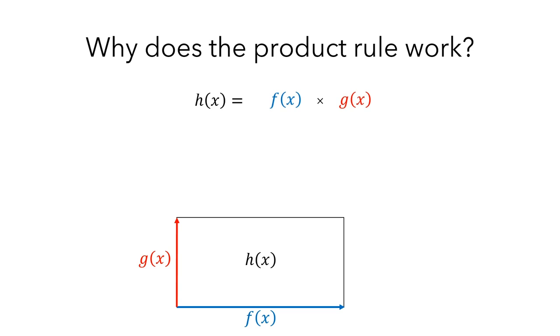Now, if we increase x by a tiny amount, then f will also change by a tiny amount. In the past, we've called this delta f. And when the change in x is small enough, we write it as df. Similarly, as we increase x by a tiny amount, then g will also change by a tiny amount, which we'll write as dg.